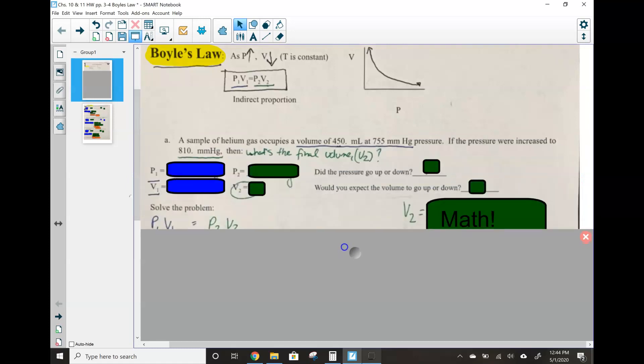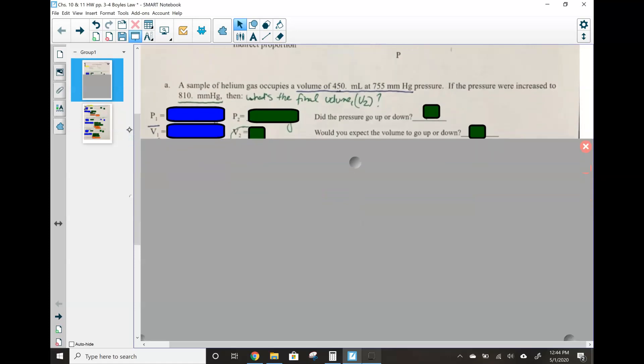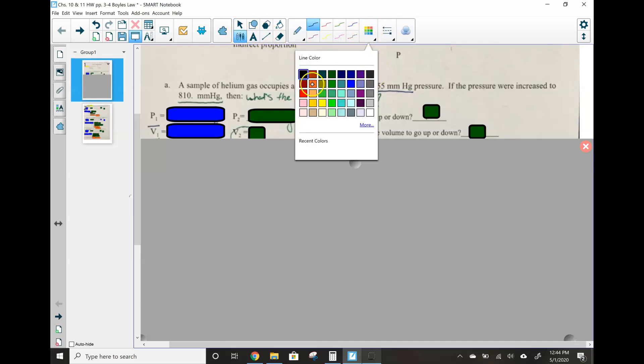P1 times V1 is always equal to P2 times V2. It's not quite a linear relationship here when we've drawn it, but we have that indirect proportion. Okay, let's go over some practice problems. Remember that you should have these done, and now we're just going over and checking them all. So question A, a sample of helium gas occupies a volume of 450 point. Now, why is that point there? Because it's giving us some sig fig information. So we've got one, two, three sig figs. The point makes that zero significant.